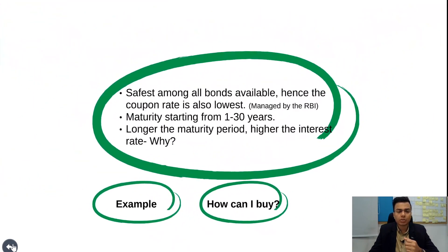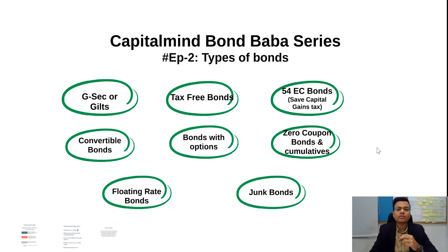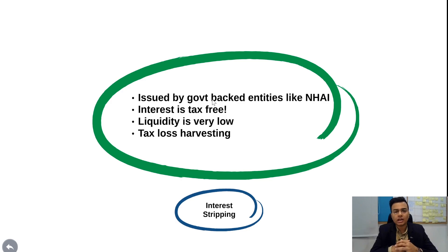The next type of bond is tax-free bonds. As the name suggests, the interest you receive on these bonds is tax-free, and they are issued by government-backed authorities. However, liquidity in the secondary market is pretty low. The most important concept I want to discuss under tax-free bonds is something called tax loss harvesting — or more specifically, interest stripping.